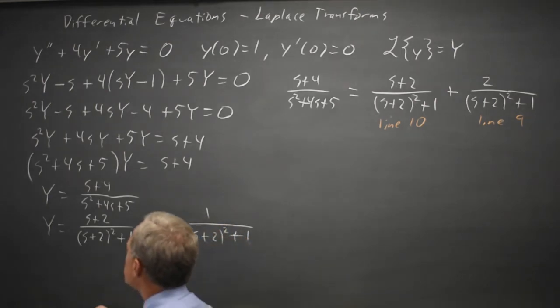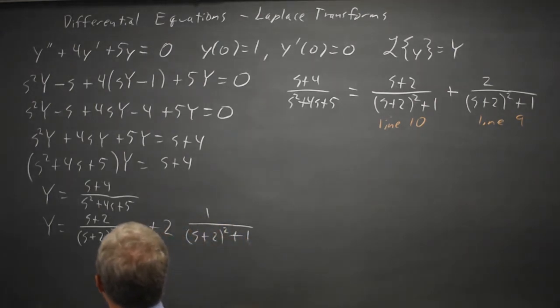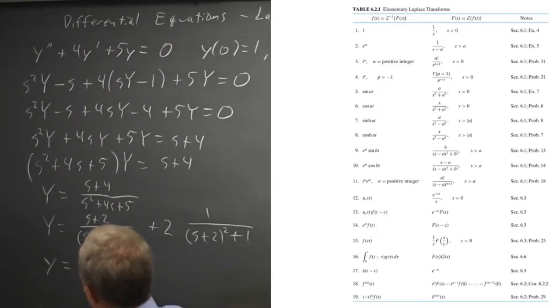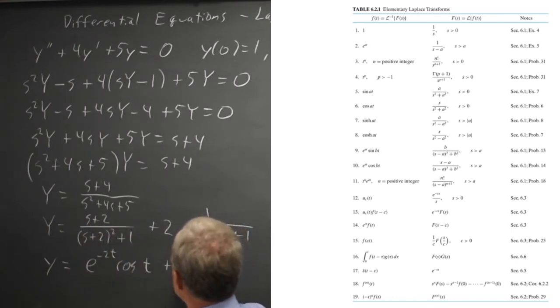Now this is the transform of my solution and both terms match the table. So lowercase y, my solution, is: line ten says e to the a t, so that's e to the negative two t cosine of b t is cosine of one t, and then plus twice line nine which is e to the a t, e to the negative two t, sine b t is sine of one t.